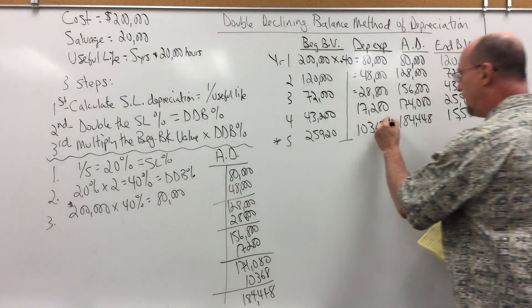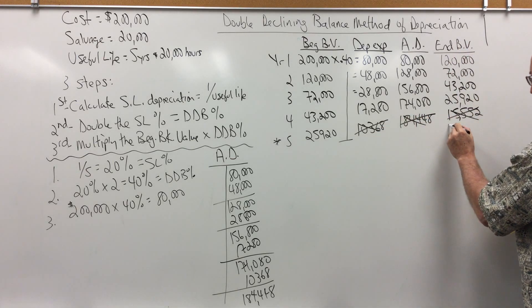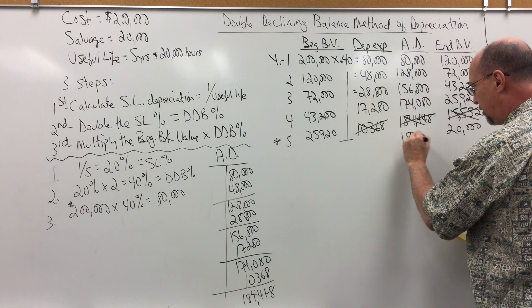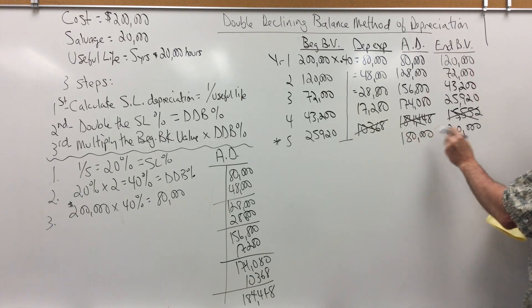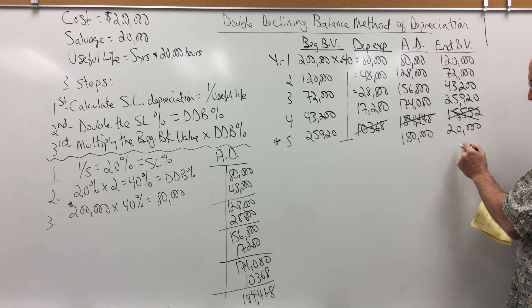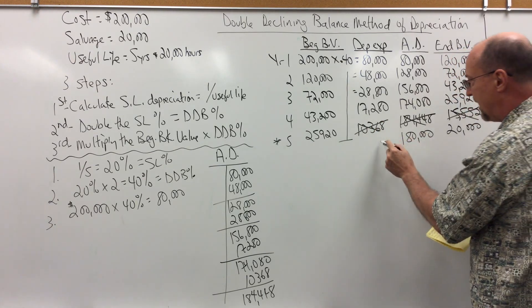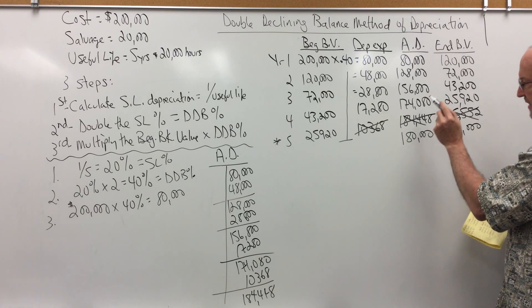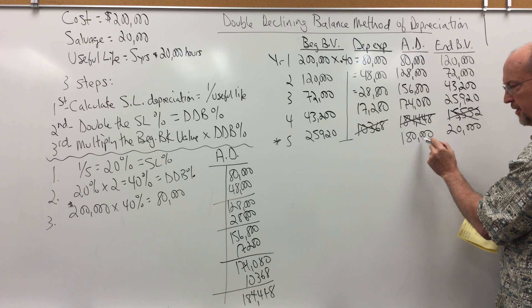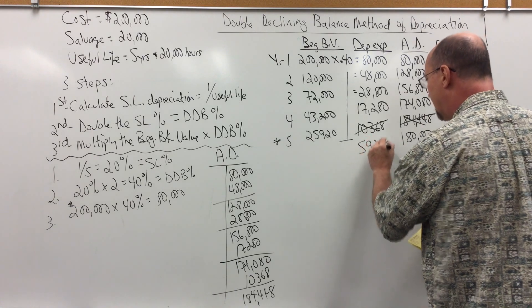So, I cannot record that much depreciation. We know that ending book value has to stop when it hits salvage value of 20,000. That means accumulated depreciation cannot exceed 180,000 because 200 cost minus 180 is 20. So, the way that I figure out depreciation expense in year five, is I look at the difference between the ending accumulated depreciation in year four, and what the ending accumulated depreciation has to be in year five, and the difference between these two is $5,920.